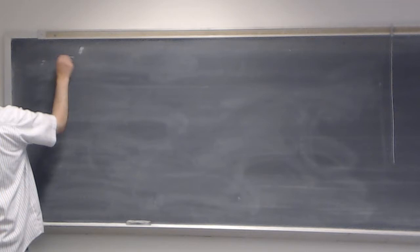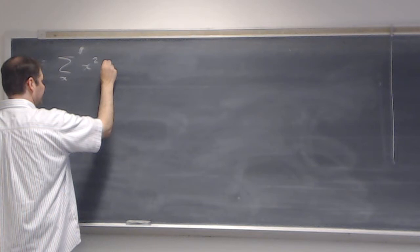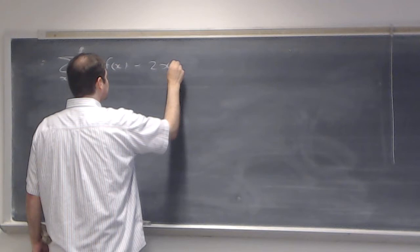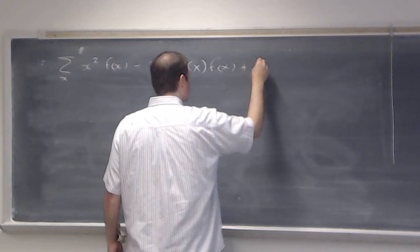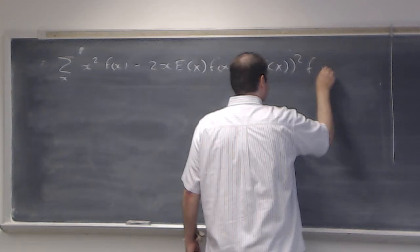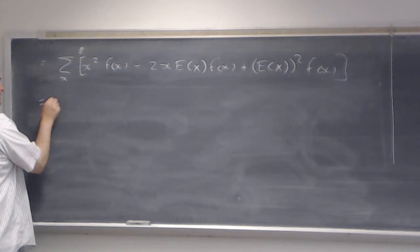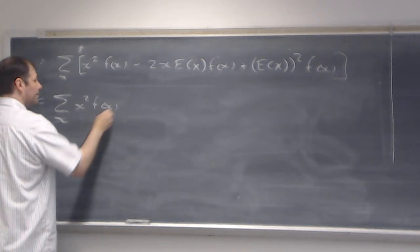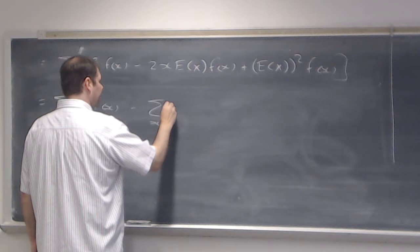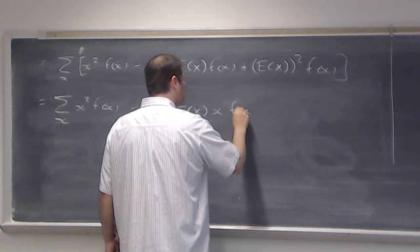So that would be equal to the sum over all output x values: x squared times f(x), minus 2x·E[x] times f(x), plus E[x]² times f(x). I can break this into three different sums — the sum of x²·f(x), minus the sum of 2·E[x]·x·f(x), plus the sum of E[x]²·f(x).